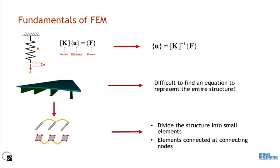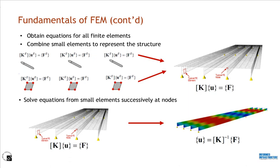This is where FEM gets into the picture. It divides the structure into smaller and simpler elements, then connects those simpler elements at the connecting nodes. It creates equations for all finite elements, and at this point, each finite element has a simpler equation that represents the behavior of that particular element. When these elements are combined to represent the actual structure, there is a finite number of equations to be solved at the nodes. By connecting the elements at the nodes, the unknown quantity becomes interpolated over the structure in a piece-wise fashion.